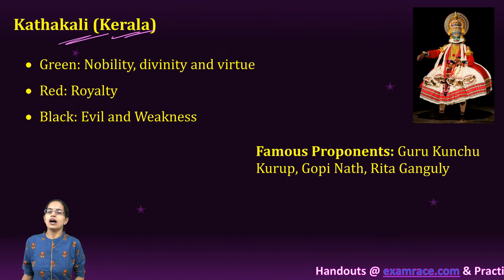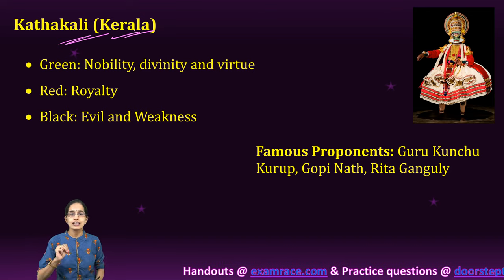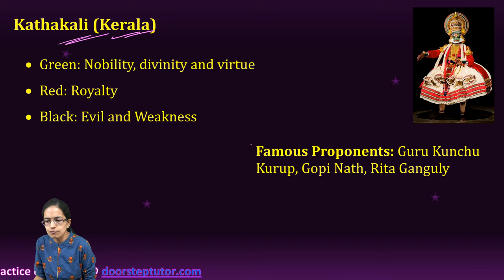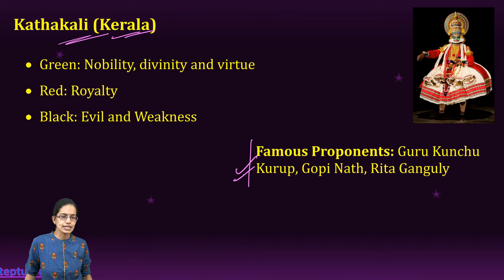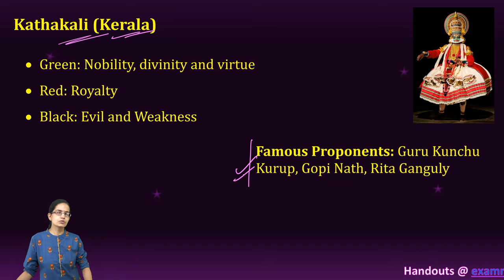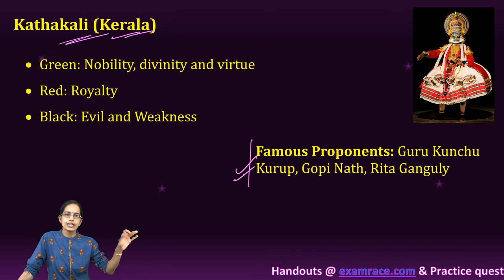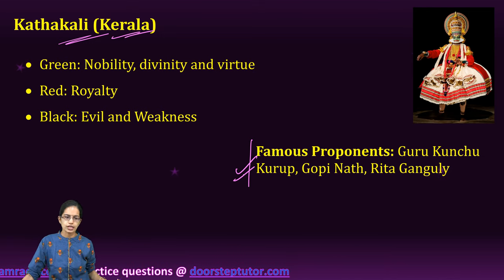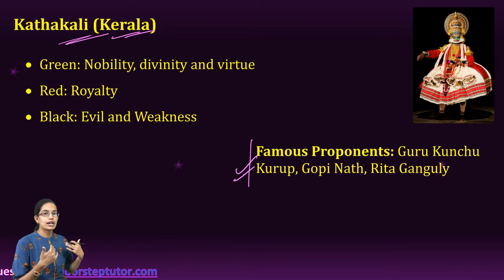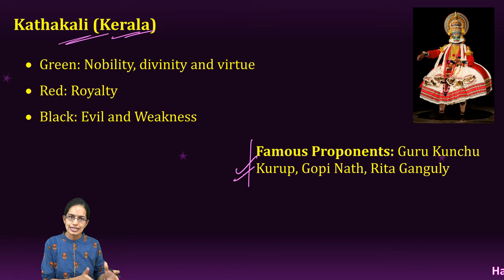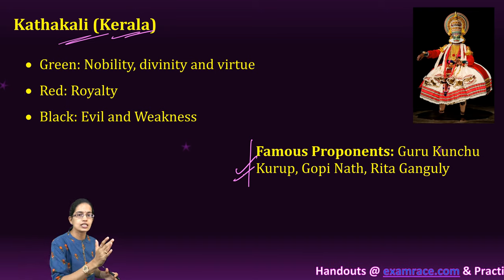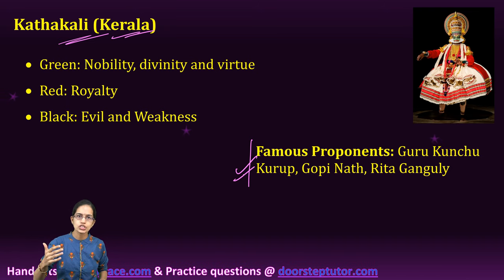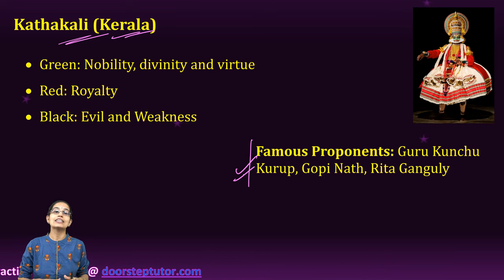Kathakali is from Kerala. Three major colors are important: green denoting nobility, red denoting royalty, and black depicting evil or weakness. Kathakali talks about the conflict between God and evil — Kath means story and Kali means performance. It was revived by Malayali poet V.N. Menon during the 1930s, and is based on mythological aspects of Ramayana and Mahabharata. It is also known as the Ballet of the East.